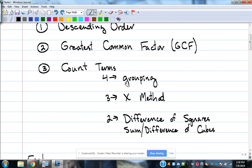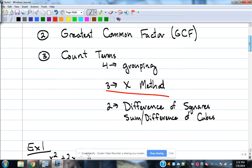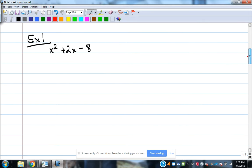If there are four terms, we're going to try to use the strategy of grouping. If there are three terms, we're going to use the x method. This is the most common method that we will use and what we'll use most today. And if there are two terms, you look for a difference of squares, which would indicate a square on the variable usually, or a sum or difference of cubes, and that would be indicated with a third power on the variable. So let's look at some examples of this and try to review factoring a little bit.